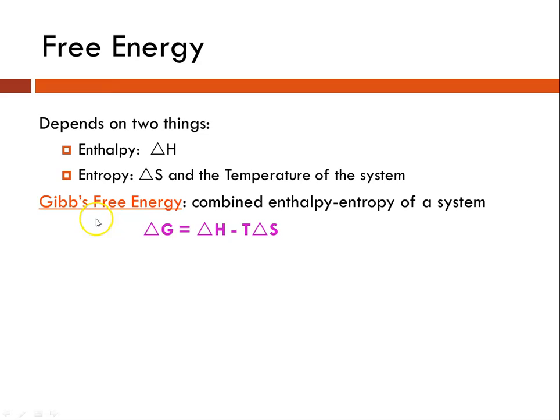So the equation for the Gibbs free energy is delta G, which is the change in the free energy of a system, is equal to delta H, which is the change in the enthalpy of a system, minus T, Kelvin temperature, times delta S, the change in the entropy of a system.